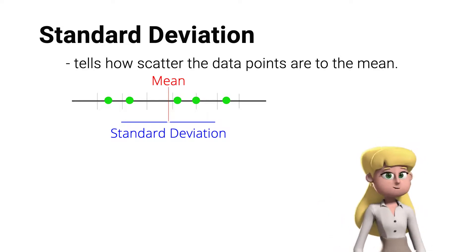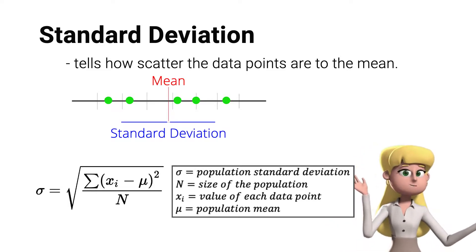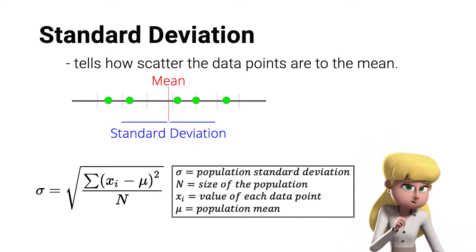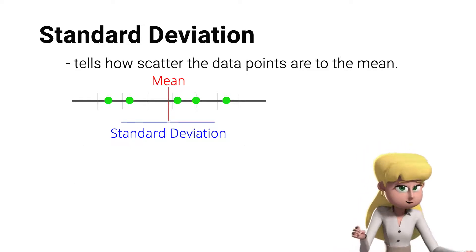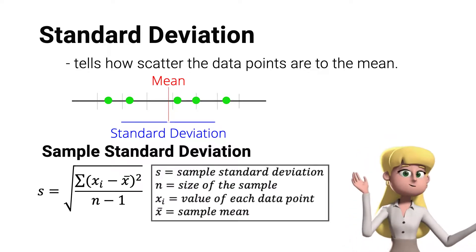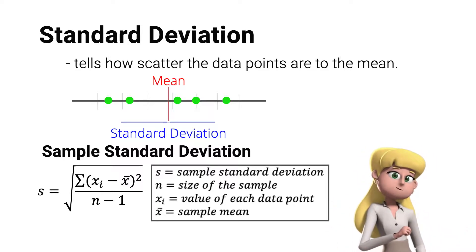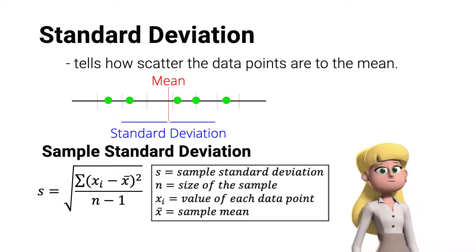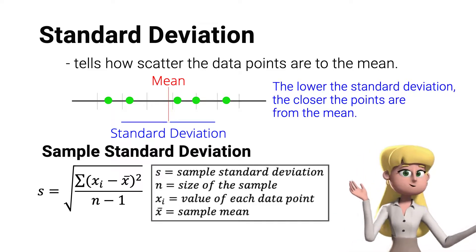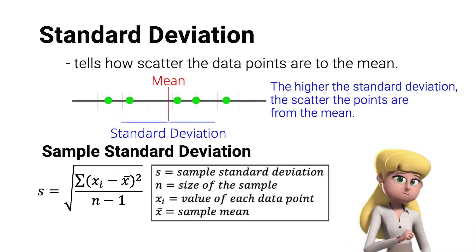We obtain the standard deviation using this formula: sigma equals the square root of the summation of the square difference of each data point from the population mean, over n total number of data points — this is the population standard deviation. However, if we take just a sample or portion of the entire data points, the standard deviation becomes s, equal to the square root of the summation of the square difference of each data point from the sample mean, over n minus 1 — this is the sample standard deviation. The lower the standard deviation, the closer the points are from the mean; the higher the standard deviation, the more scattered the points are from the mean.